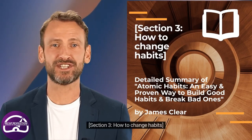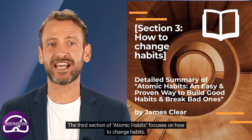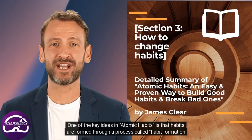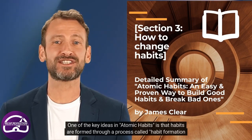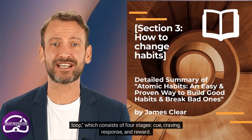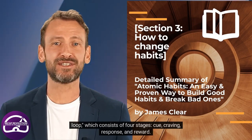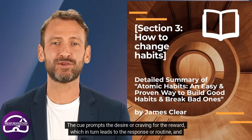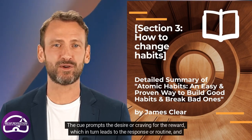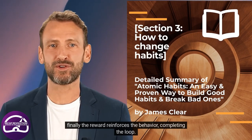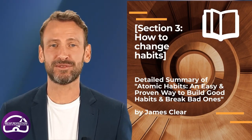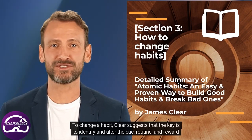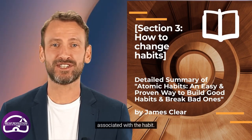The third section of Atomic Habits focuses on how to change habits. One of the key ideas is that habits are formed through the habit formation loop, which consists of four stages: cue, craving, response, and reward. The cue prompts the desire or craving for the reward, which in turn leads to the response or routine, and finally the reward reinforces the behavior, completing the loop. Clear suggests that the key to changing a habit is to identify and alter the cue, routine, and reward associated with it.